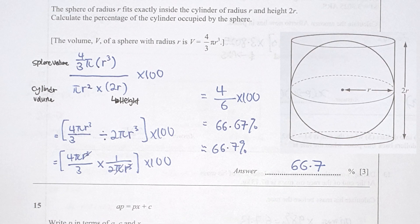Question 14: the numerator represents the sphere's volume and the denominator represents the cylinder's volume. I listed all the information, arranged and ran the calculation. You get 4 over 6 times 100, which translates into 66.7 percent.